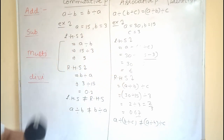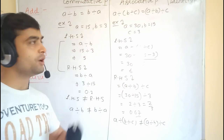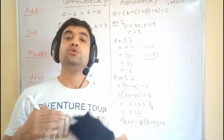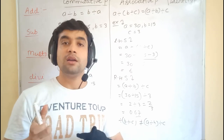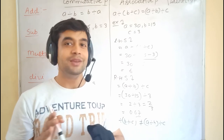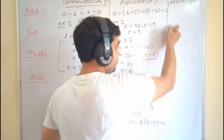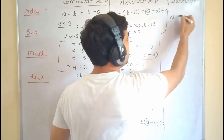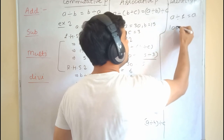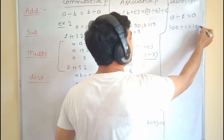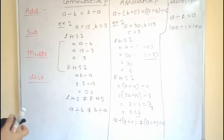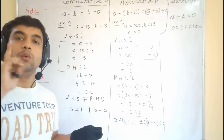So we write: (a divided by b) divided by c is not equal to a divided by (b divided by c), meaning division does not follow associative property. For identity property of division: if we divide any number by 1, it remains the same. So the division identity for any number is 1.